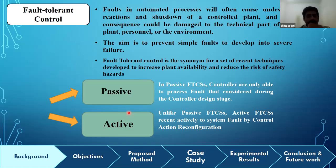Generally, fault-tolerant control is divided into two groups: passive and active. In passive controller design, controllers are only able to process faults that are considered during the controller design stage. Unlike passive fault-tolerant control, active fault-tolerant control systems respond actively to system faults by control action reconfiguration. In addition, in this type, the main issue is choosing a powerful controller. It's obvious that the second type of fault-tolerant control is quite better than the first one, as it's able to prevent against unpredicted faults.